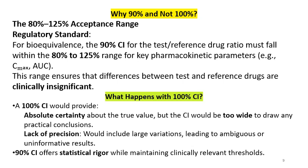The 80–125% acceptance range is given by regulatory bodies. For bioequivalence, the 90% CI of the test and reference drug ratio must fall within 80–125% for key pharmacokinetic parameters — Cmax and AUC. This range ensures that differences between test and reference drugs are clinically insignificant.